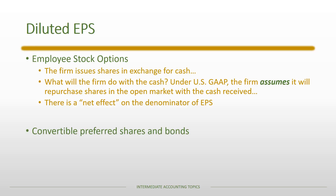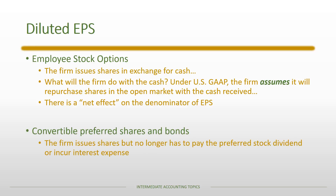With convertible preferred shares and bonds, the firm issues shares but no longer has to pay a preferred stock dividend or incur interest expense. So there is both a numerator and a denominator effect from each conversion. Because both are affected, it is not clear whether each conversion increases or decreases EPS. We include any conversions that would decrease EPS and ignore any that would increase EPS — diluted EPS remains a worst-case scenario.